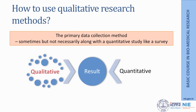Qualitative research methods can be used as the primary data collection method where the objective is to understand behaviors and get in-depth understanding of why people do or do not do certain things, why certain behaviors are practiced or not. You get a lot of rich data using qualitative methods themselves. Sometimes, it can also be done alongside a quantitative study.